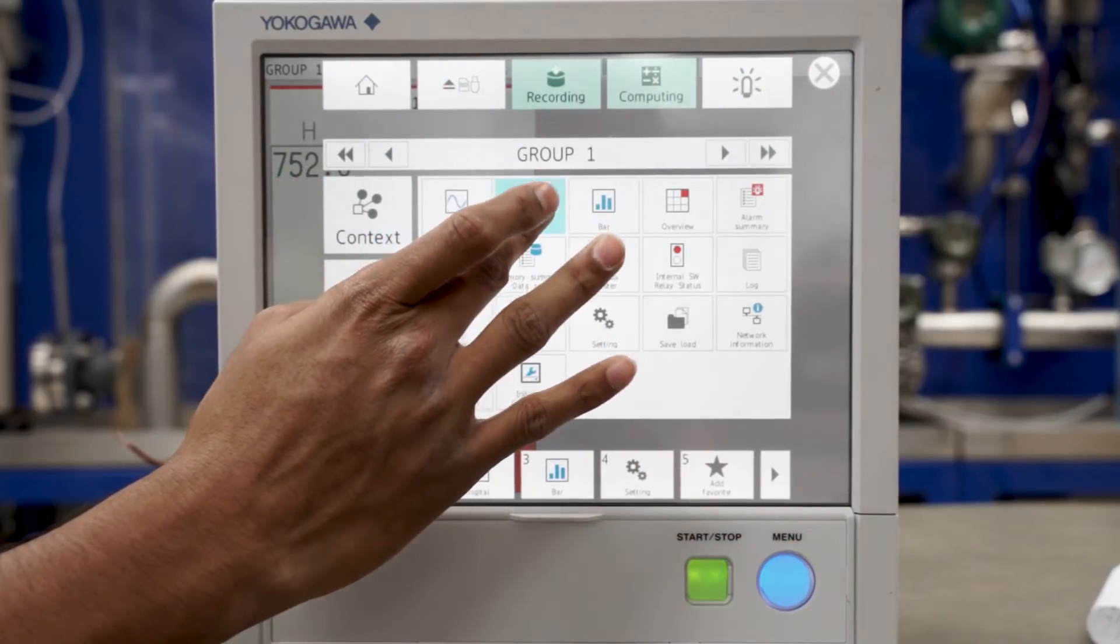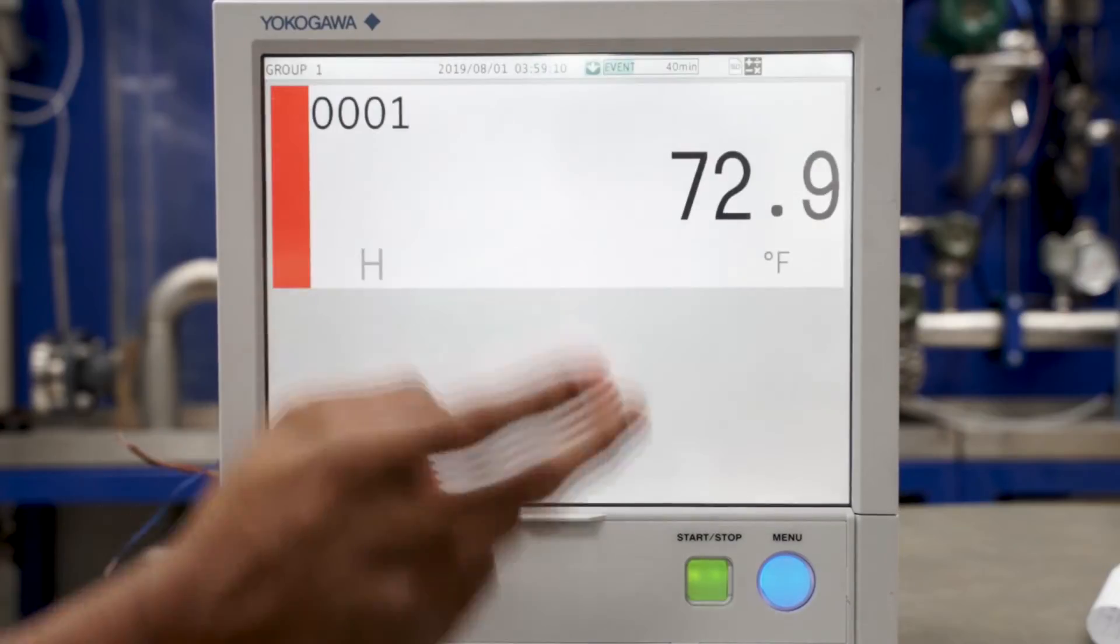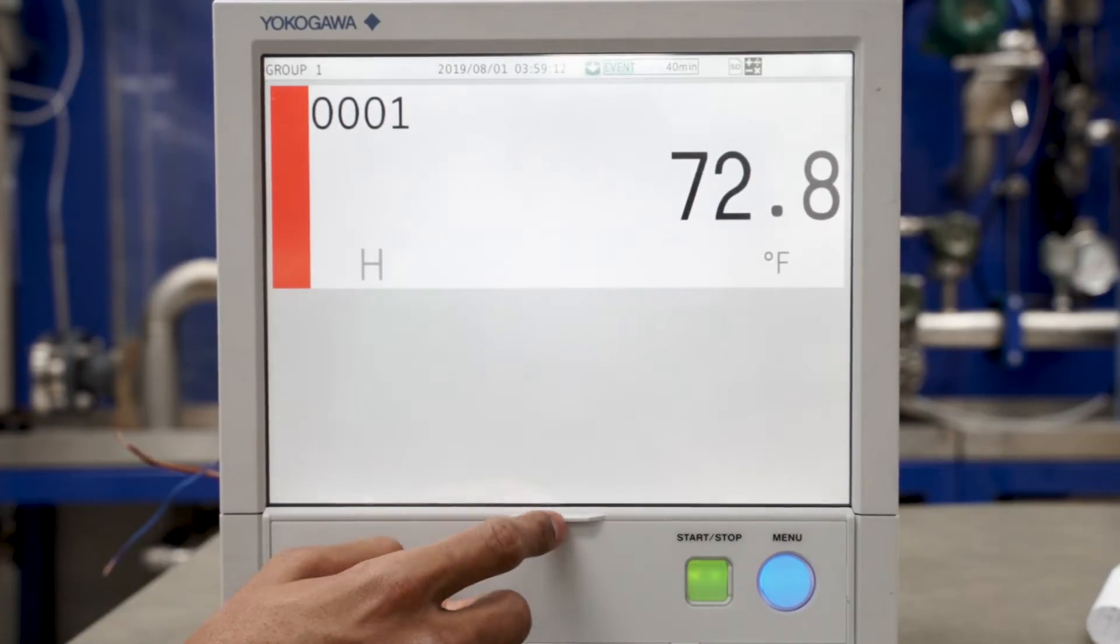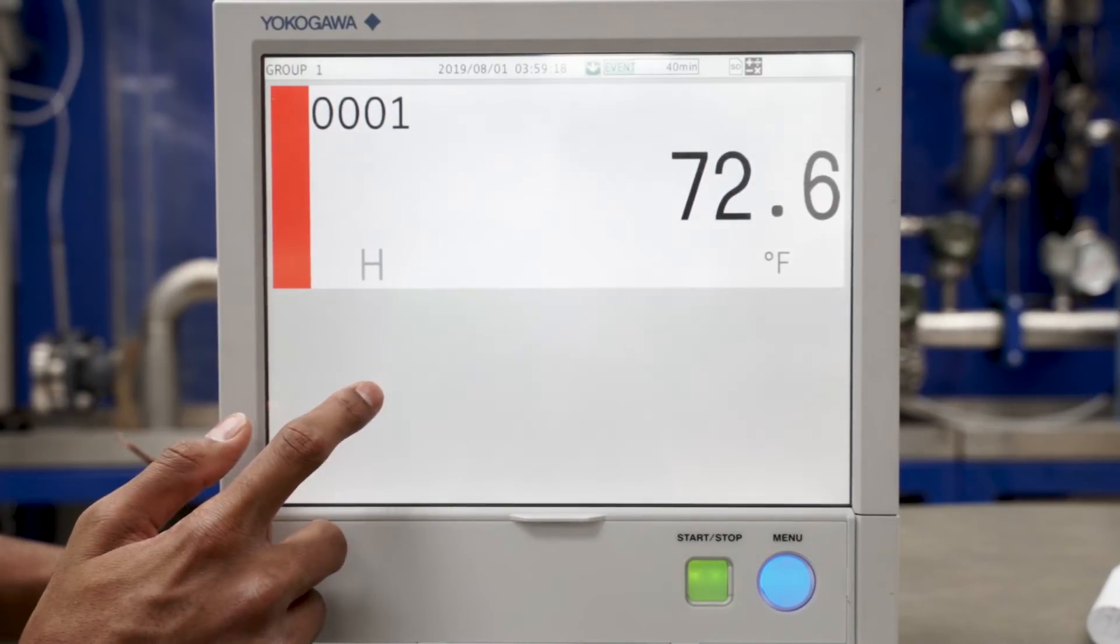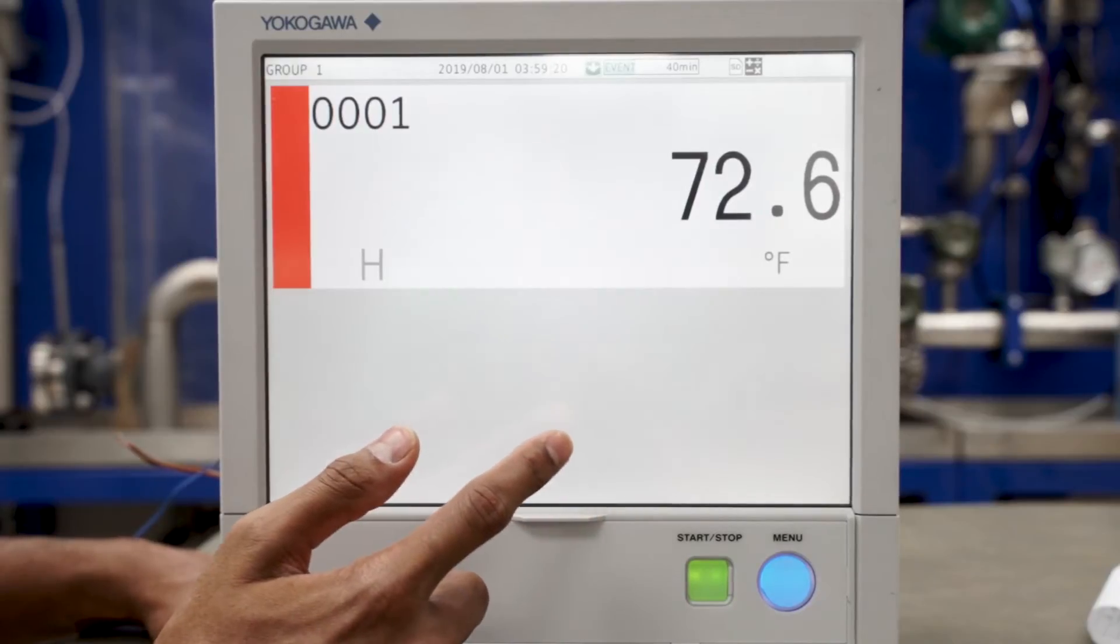Additionally, going into the browse menu and selecting the digital display is another way for an operator to read instantaneous temperature, pressure, or any field parameter measurements.